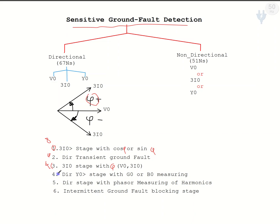In the previous session, we started our discussion about the fourth method — the directional method with the zero-sequence admittance threshold of the system. We discussed that sometimes we use G0, the conductance part of the zero-sequence admittance, or the susceptance part of the zero-sequence admittance for determining the direction. We also discussed what the zero-sequence admittance of the system is and how it is determined.